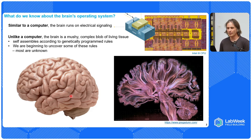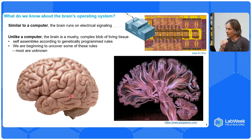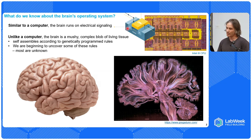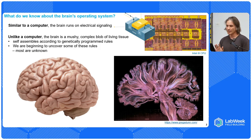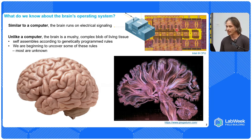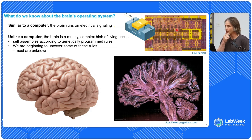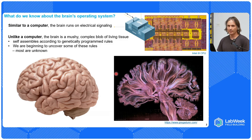What do we know about the brain's operating system? Similar to a computer, the brain runs on electrical signals. Here's a picture of Intel's i9 CPU and a diagram of a transistor. These simple sets of logical elements can do very complicated things, but unlike a computer, the brain is a mushy, complex blob of living tissue, and it self-assembles according to genetically programmed rules. We are beginning to uncover some of these rules, but most of them are unknown.